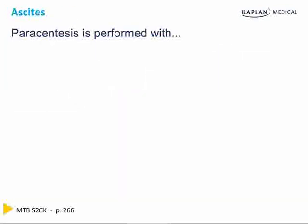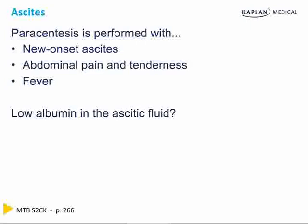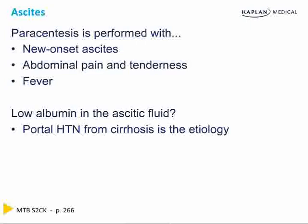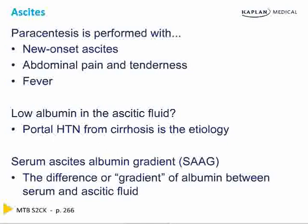Abdominal paracentesis is performed with new onset of ascites, abdominal pain and tenderness accompanied by fever. If the patient has low albumin in the ascitic fluid, he has portal hypertension from cirrhosis as the etiology. To be 100% sure, calculate a serum ascites-albumin gradient, or SAG ratio — this is the difference or gradient of albumin between the serum and ascitic fluid.